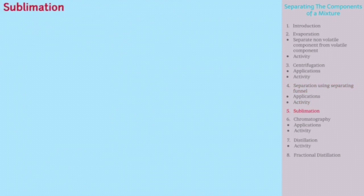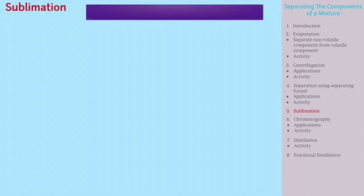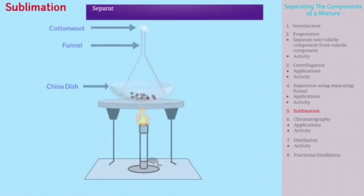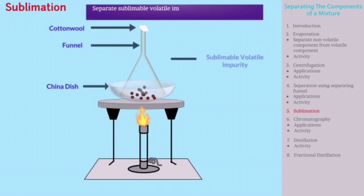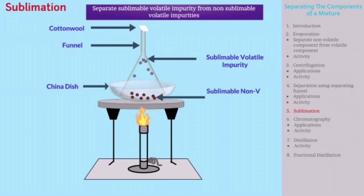Next separation technique is sublimation. This method is used to separate a mixture that contains a sublimable volatile component, for example ammonium chloride, from a non-sublimable impurity, for example common salt.